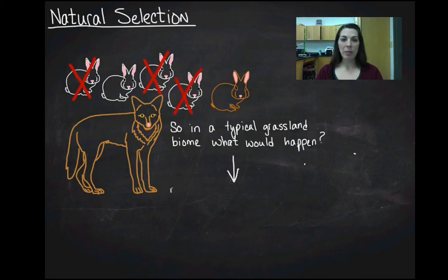So what would happen is in the next generation, the white rabbits, if this is a genetic trait, are going to produce more white rabbits, and the brown rabbits, if this is a genetic trait, are going to produce more brown rabbits. Now this has to be a genetic trait because otherwise this doesn't make any sense, right? So you'll see in our population now the frequency of brown rabbits is higher than the frequency of brown rabbits was in the starting population.